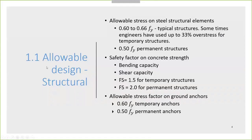When we use traditional allowable stress design, we utilize safety factors of 0.6 to 0.66 allowable stress factors on the steel, and some engineers have used overstress up to 33%. For permanent structures, we use 0.5 Fy, where Fy is the yield strength of the steel. For concrete, we check bending and shear capacity, using safety factors of 1.5 for temporary extraction and 2.0 for permanent.